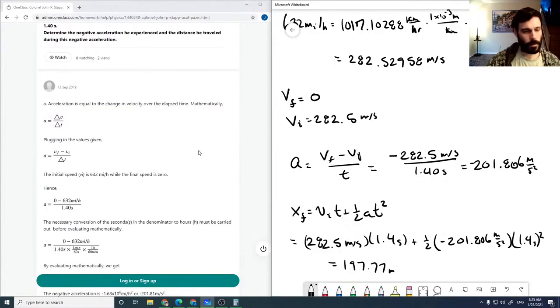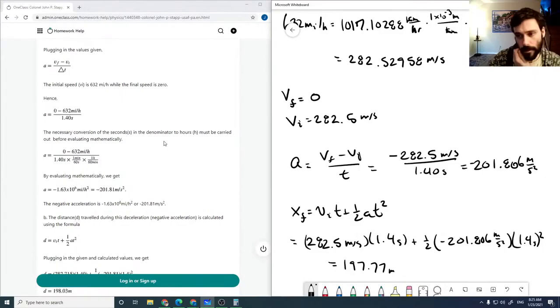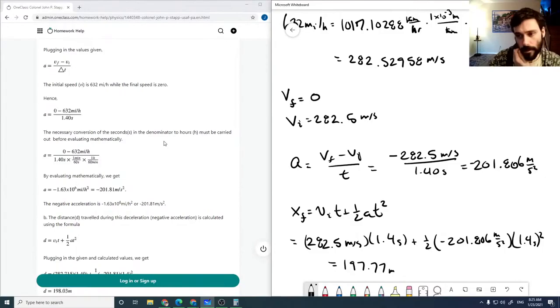So he travels almost 200 meters while decelerating. The acceleration is minus 201 meters per second squared, and the distance traveled is about 198 meters. Any differences would be from rounding. Looks good.